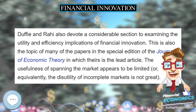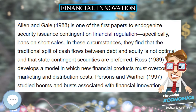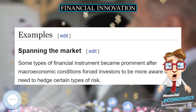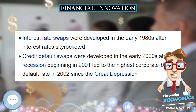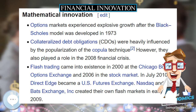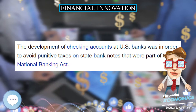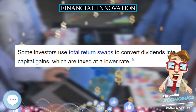Allen and Gale (1988) is one of the first papers to endogenize security issuance contingent on financial regulation, specifically, bans on short sales. In these circumstances, they find that the traditional split of cash flows between debt and equity is not optimal, and that state-contingent securities are preferred. Ross (1989) develops a model in which new financial products must overcome marketing and distribution costs. Persons and Warther (1997) studied booms and busts associated with financial innovation. The fixed costs of creating liquid markets for new financial instruments appears to be considerable.